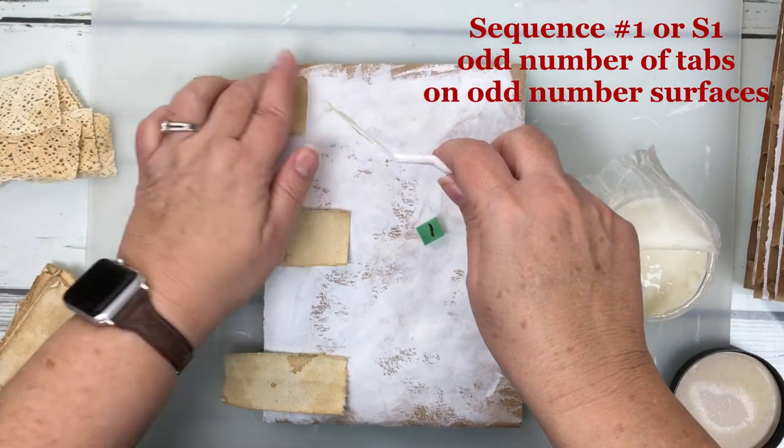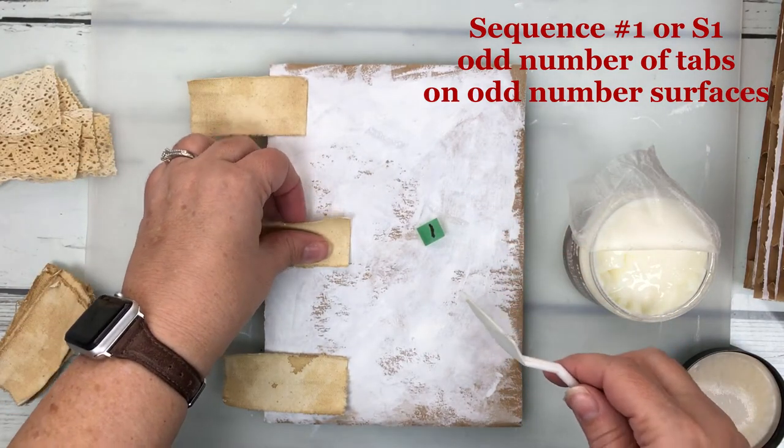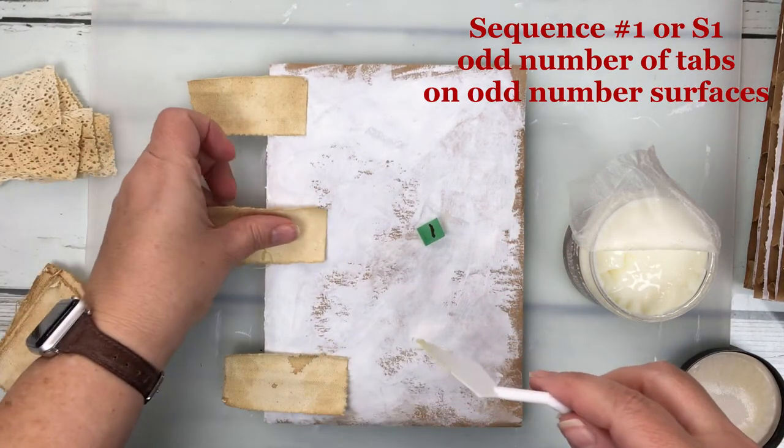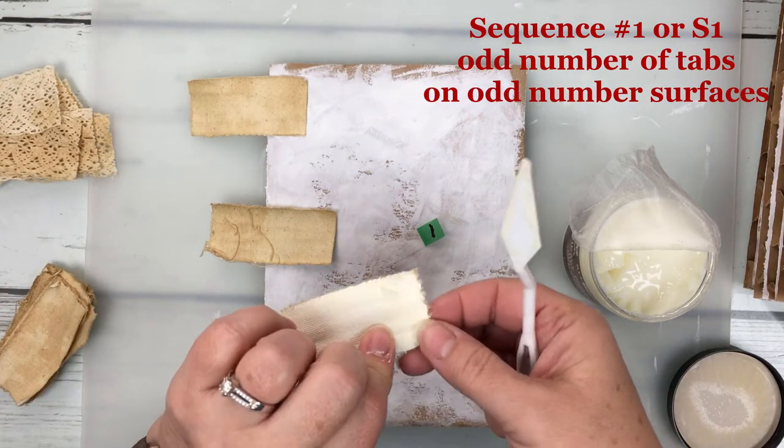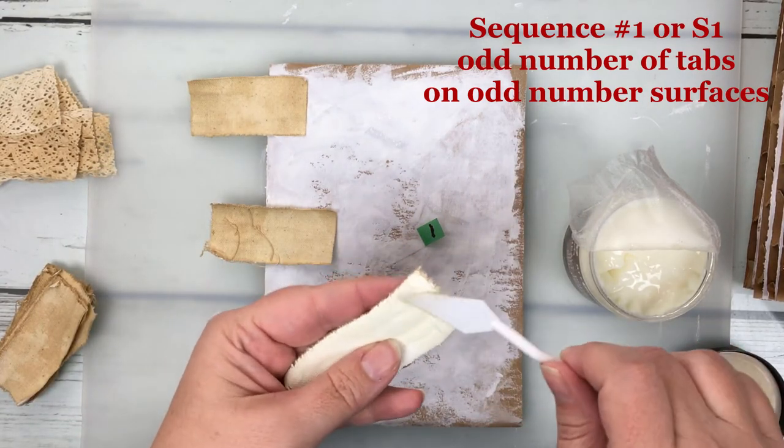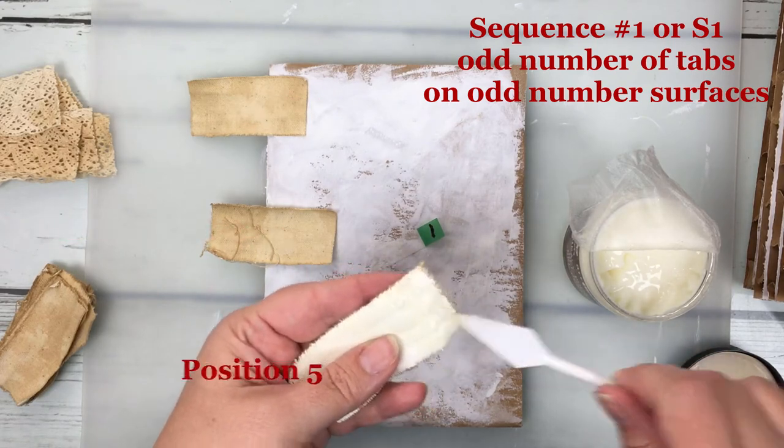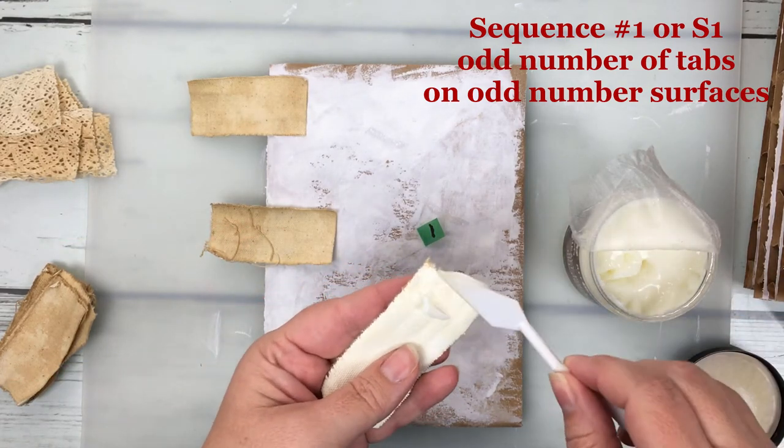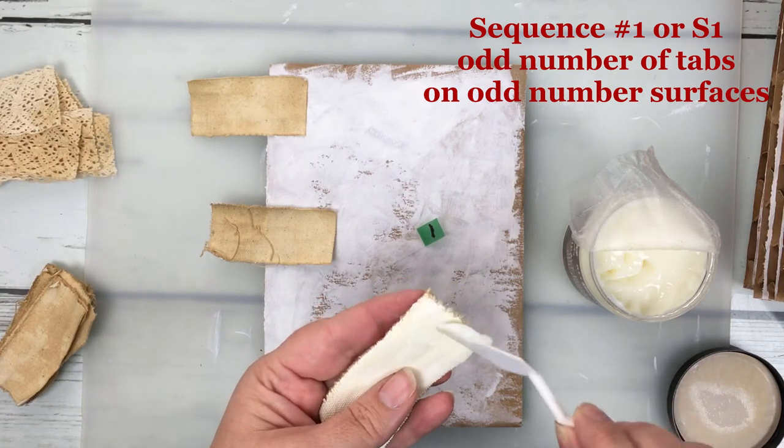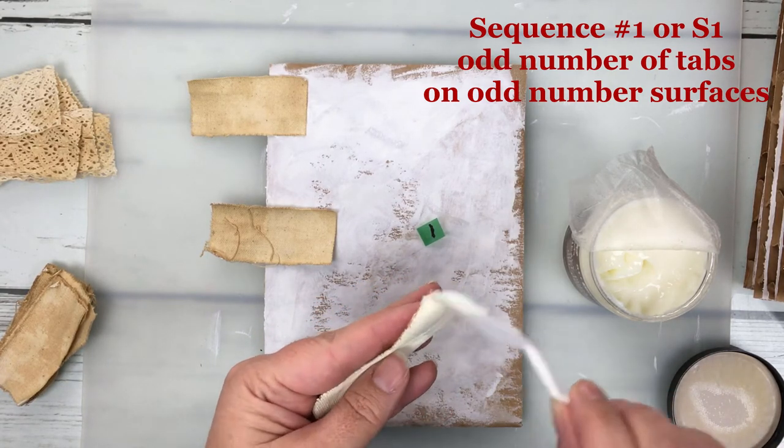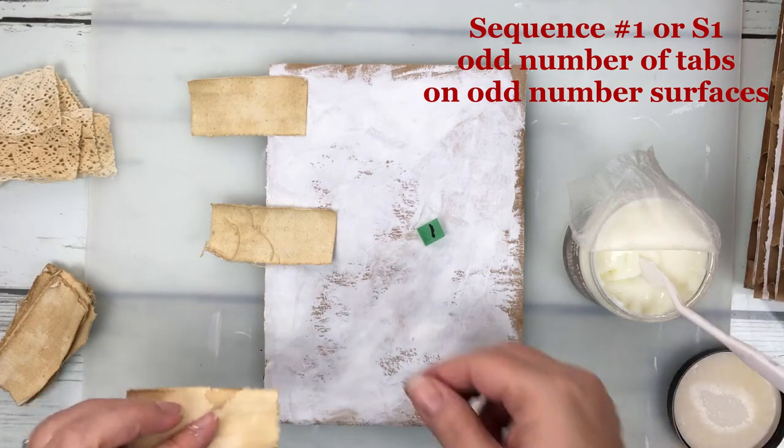I've got these labeled here so you can see what the sequencing is. Since I went with five tabs, my sequence one are in positions one, three and five. So the canvas tabs are in positions one, three and five on my odd number surfaces.